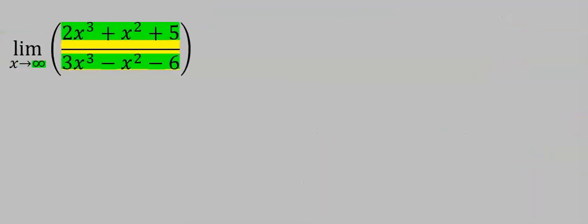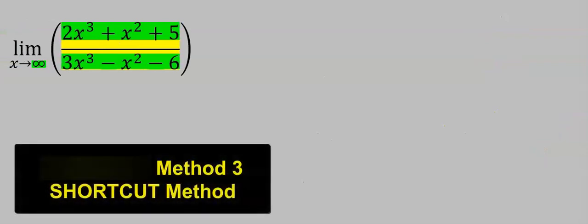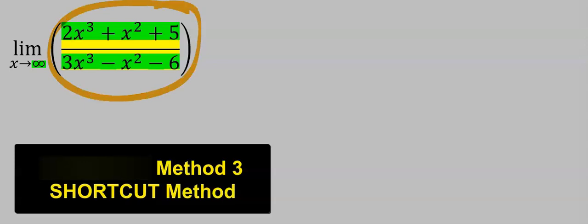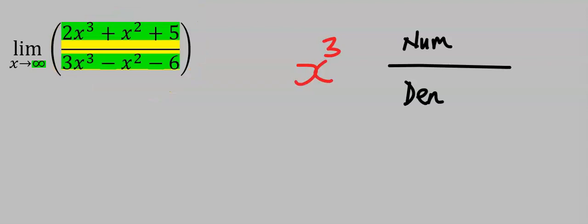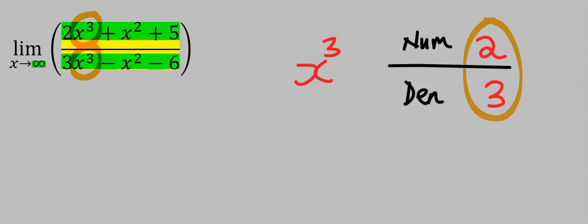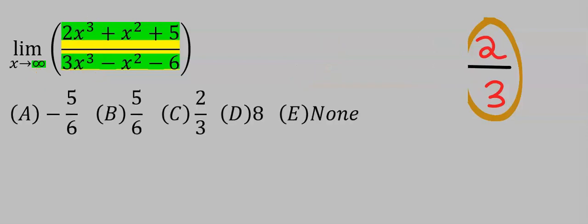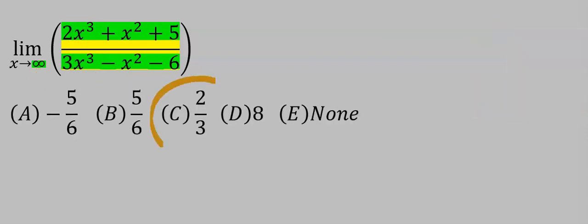The third alternative: consider the highest power in the function, which is x³. What is the coefficient of x³ in the numerator? It is 2. What is the coefficient of x³ in the denominator? It is 3. The answer is 2/3 — you don't even need to solve the full problem when x tends to infinity. From the options, our answer is C.